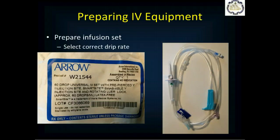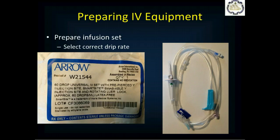Prepare your infusion set, which connects the bag of IV fluid to the catheter. They come in two drip types: micro and macro. Micro drip sets deliver 60 drops per ml and are used for administering medications, giving very fine control over fluid volume. Macro drip sets deliver 10 to 15 drops per ml — less fine control, but you can deliver larger volumes of fluid faster, and that's what we start on most patients.